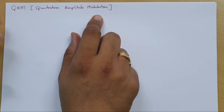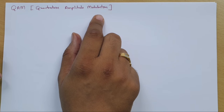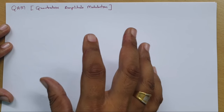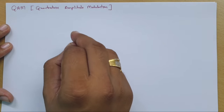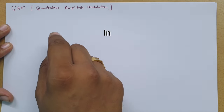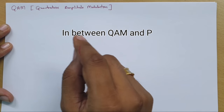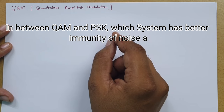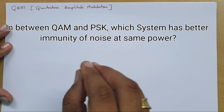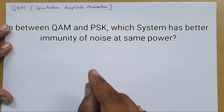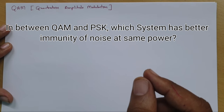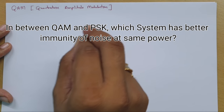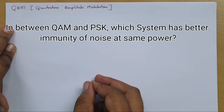Before we start, I would like to ask you a quiz question for this session. Write your answer in the comments, and in the next session I'll explain the answer. The question is: between QAM and PSK, which system has better noise immunity at the same power? Write your answer in the comments.